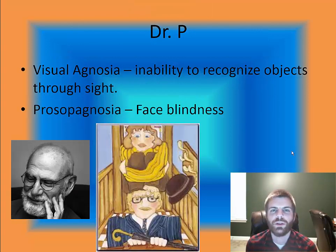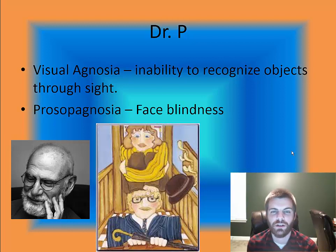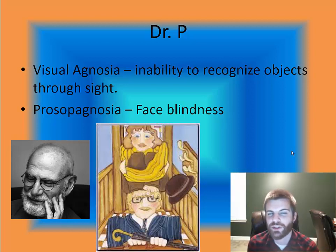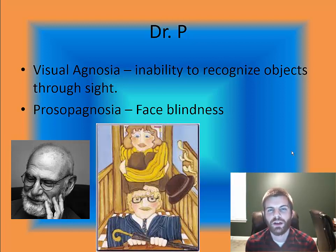We have the case of Dr. P from Oliver Sacks' work — a person who suffers from visual agnosia. Visual agnosia is an inability to recognize objects through sight. If you receive other sensory stimulation — smell, taste, or tactile — that might help identify an object, but sight alone cannot. For example, if someone holds a rose in front of you and you suffer from visual agnosia, just looking at it gives you no idea it's a rose.